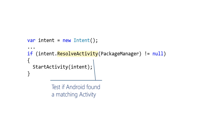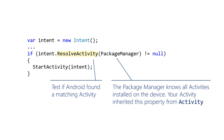The ResolveActivity method checks at runtime to see if Android is able to find a match for your intent. ResolveActivity uses the services of the PackageManager to perform this test. The PackageManager knows all the activities installed on the user's device. The Activity class has a PackageManager property that provides you with a PackageManager object you can use with ResolveActivity. ResolveActivity returns a ComponentName object that gives you the identity of the activity that will service your request.